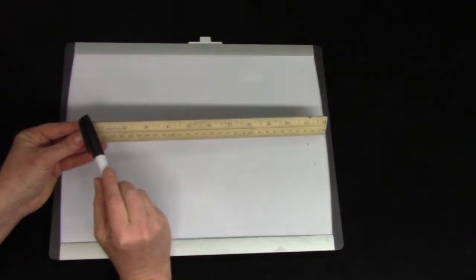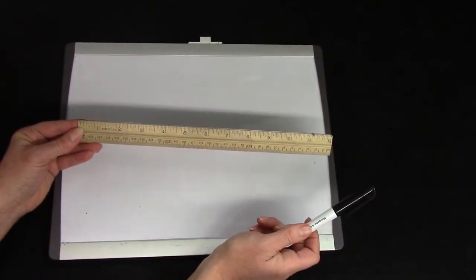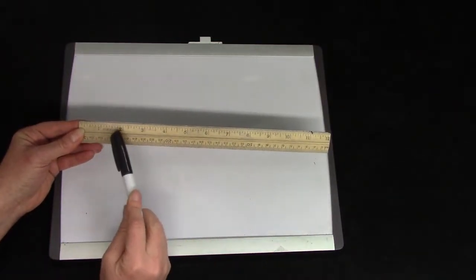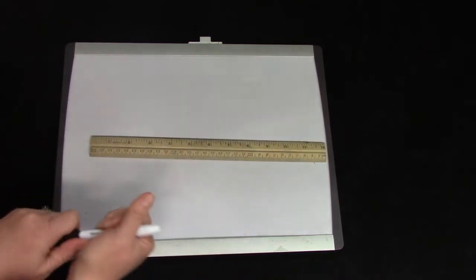A ruler has a straight edge so that we can draw straight lines. We can also measure with it, but today we're not going to be measuring. We're going to be drawing some lines.